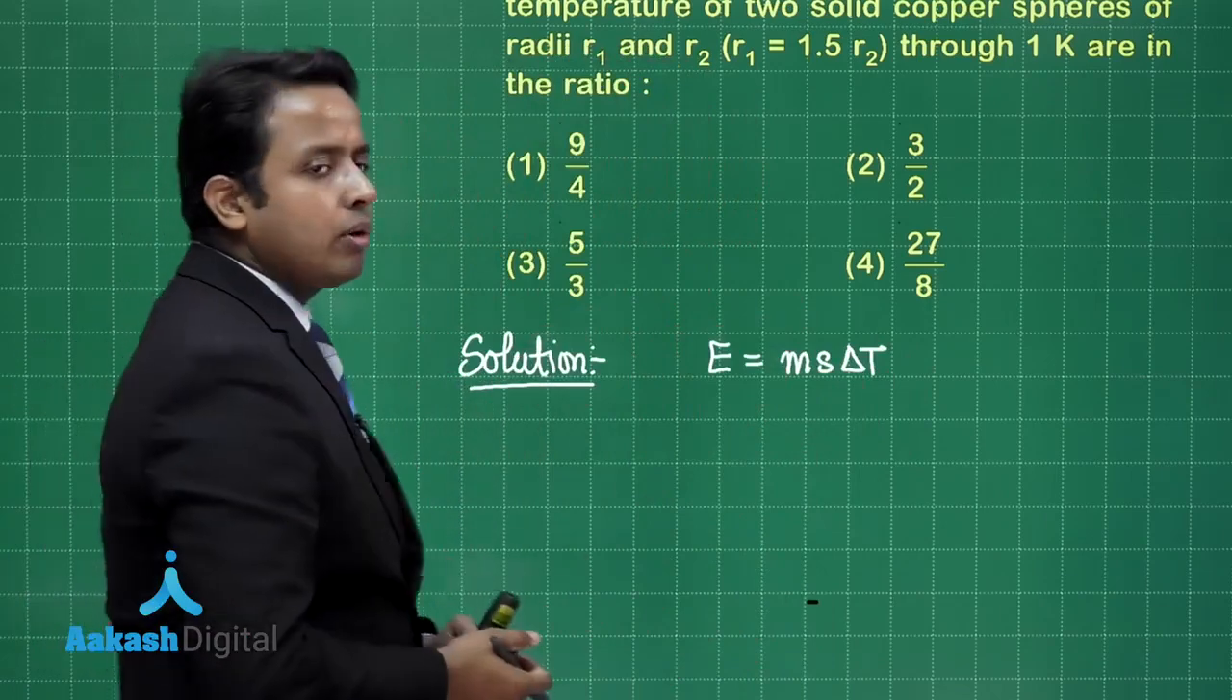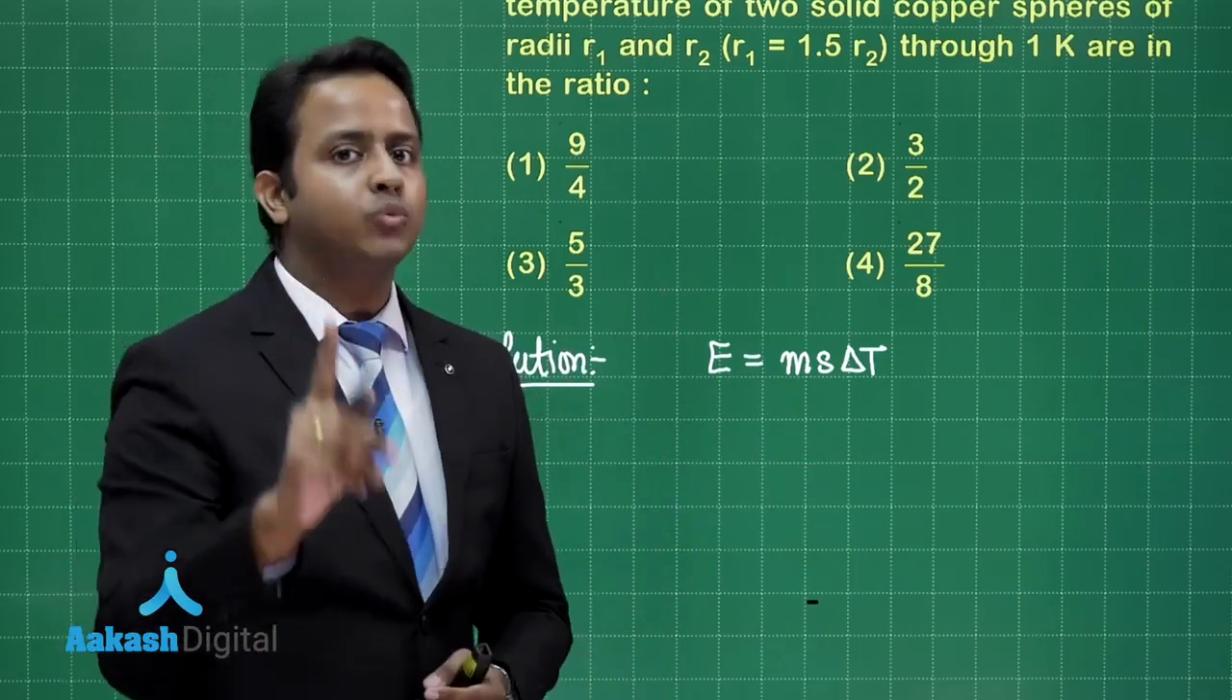The heat required to raise the temperature of a body is given by Q = msΔT, where m is the mass of the object, s is the specific heat, and ΔT is the change in temperature. Specific heat for both cases is the same because both are copper, and both have the same temperature increase of 1 kelvin. So heat is proportional to mass.